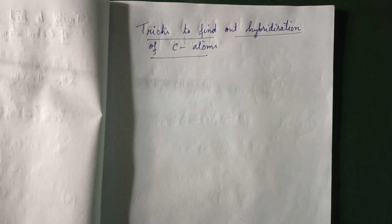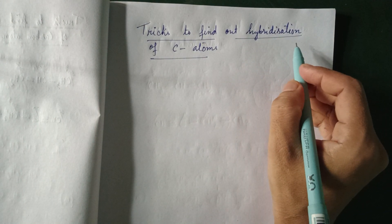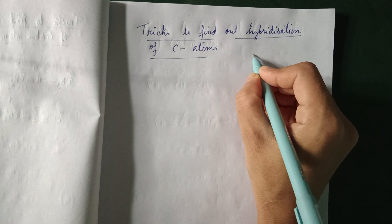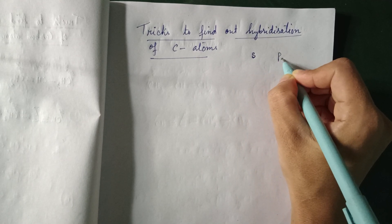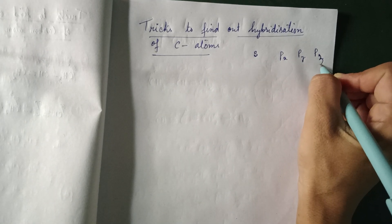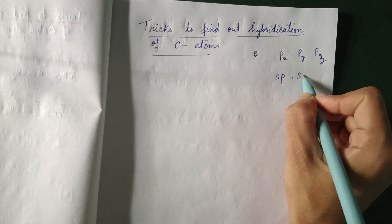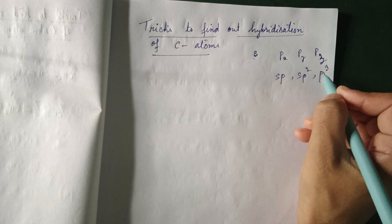Hi everyone. In this video I'll be sharing tricks to find out the hybridization of carbon atoms. Hybridization means mixing up of orbitals. We have the s orbital and three p orbitals: px, py, and pz. When one s and one p mix, it is called sp hybridization. When s mixes with two p orbitals it is sp2, and when s mixes with all three p orbitals it is called sp3 hybridization.